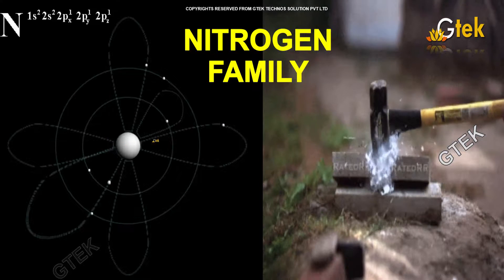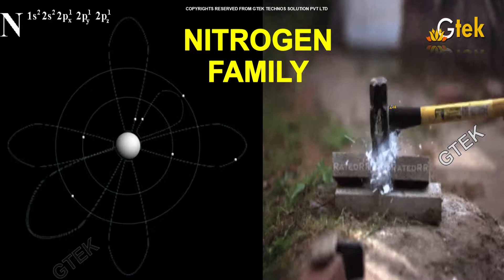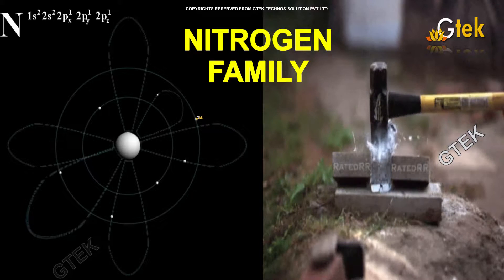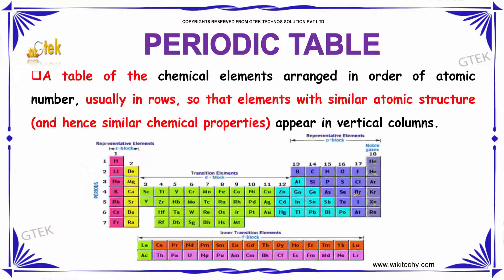Let's move on to the nitrogen family. The nitrogen family is an important area in the field of chemistry. Let's talk about the periodic table first — a table of chemical elements arranged in order of atomic number, usually in rows, so that elements with the same atomic structure appear in vertical columns.